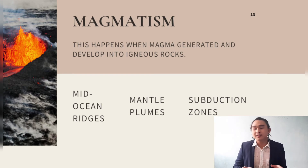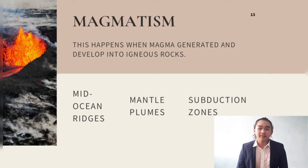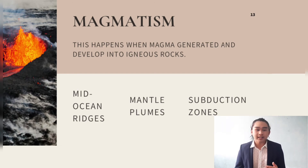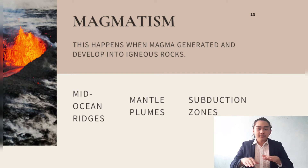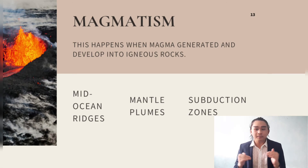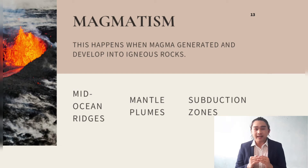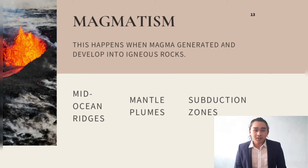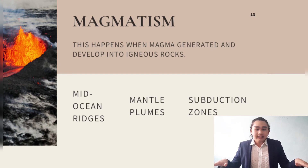How does magmatism happen in these three places? At mid-ocean ridges, the rising magma in mantle convection cells brings heat to the surface, transferring heat to the overlying rocks. At mantle plumes, the transfer of heat and compression results in magma generation, and the source of heat is usually much deeper. At subduction zones, oceanic crustal rocks are formed along spreading centers, typically beneath several kilometers of seawater.